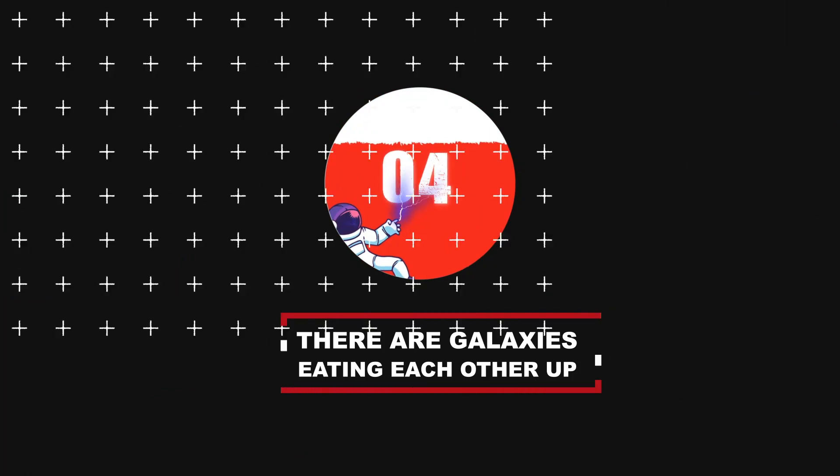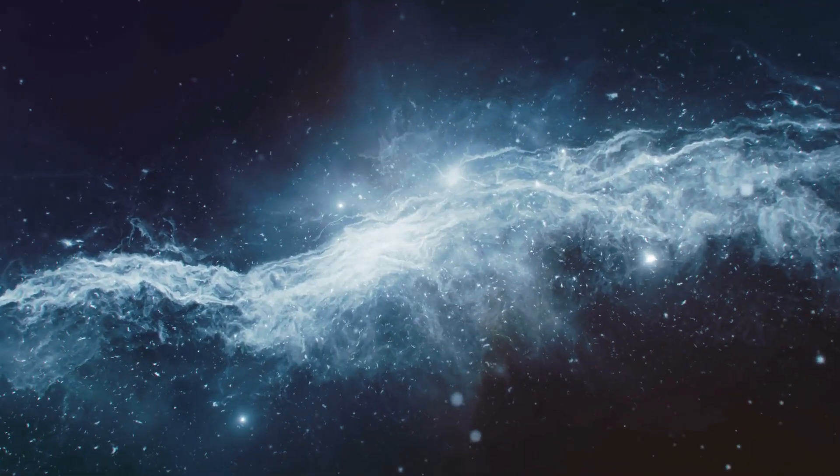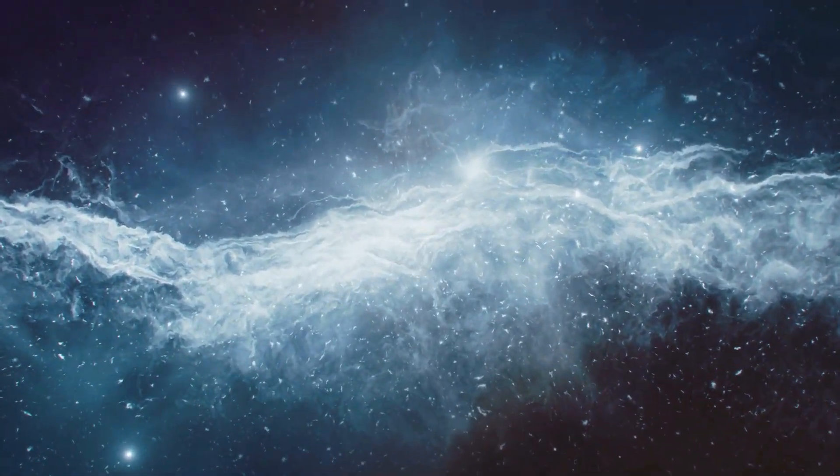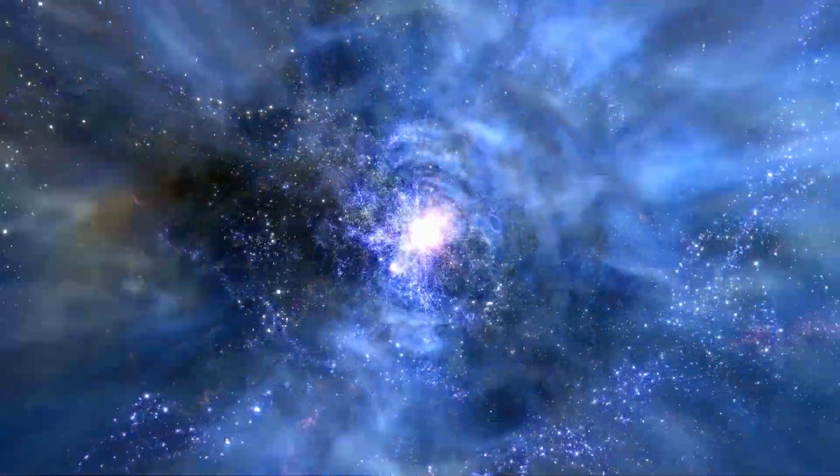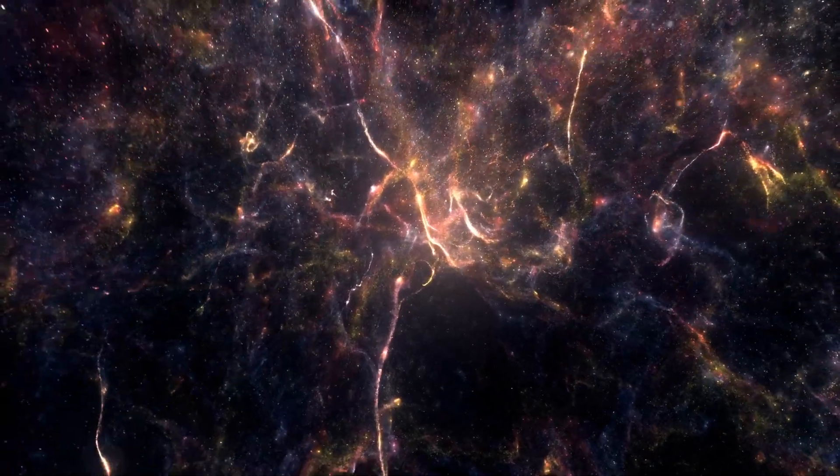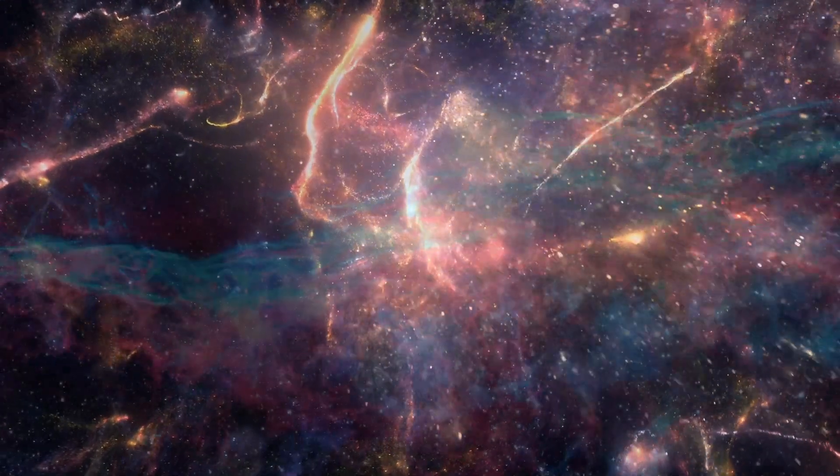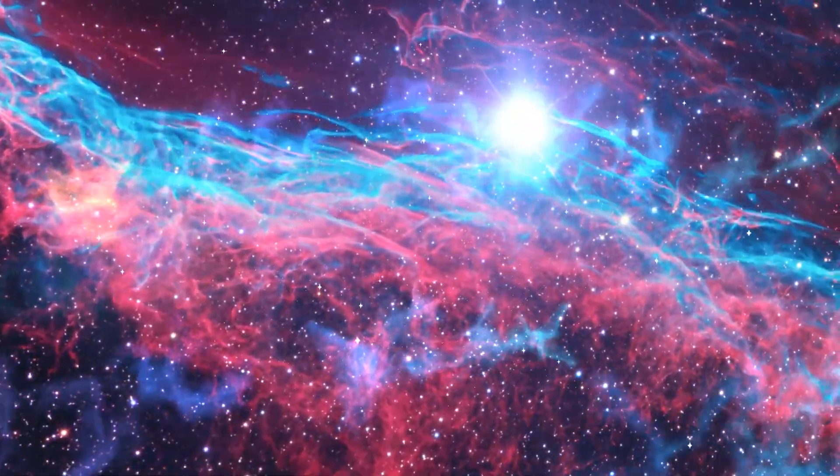Number 4, there are galaxies eating each other up. Galaxies are not just some sort of stable void where all the stars and the planets live in peace. Some galaxies are actually merging with or even eating up other galaxies. This phenomenon is called galactic cannibalism, which sees a larger galaxy often start to devour another galaxy until the two galaxies are indistinguishable from one another. Often this leads to some radical shapes and features given to the new super galaxy.